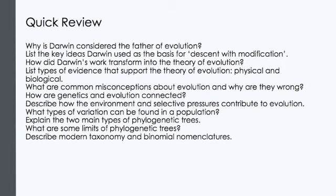Let's quickly recap our lecture tonight. Why is Darwin considered the father of evolution? You should be able to answer that question now. You should also be able to list key ideas Darwin used as the basis for descent with modification, and know how Darwin's work transformed into the theory of evolution. You should be able to list the types of evidence that support the theory of evolution, both physical and biological, detail some common misconceptions about evolution and why they are wrong, and describe how genetics and evolution are connected. You should be able to describe the environment and selective pressures that contribute to evolution, know the types of variation found within a population, explain the two main types of phylogenetic trees, know some of the limits of phylogenetic trees, and describe modern taxonomy and binomial nomenclature.